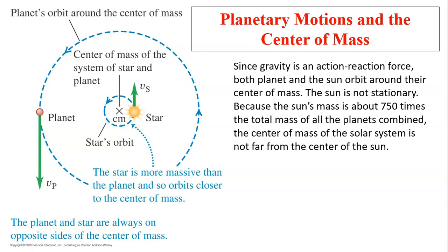Planetary motion and the center of mass. Since gravity is the action-reaction force, both planet and sun orbit around their center of mass. The sun is not stationary because the sun's mass is about 750 times the total mass of all the planets combined. As a matter of fact, the center of mass of the solar system still resides within the sun, very close to the center of the sun itself. However, it is not the center. So the sun does move around. Just like this planet and star system, both are moving around the center of mass. The planet and star are always on the opposite side of the center of mass.